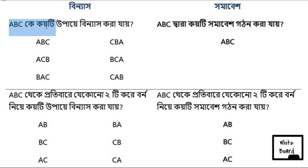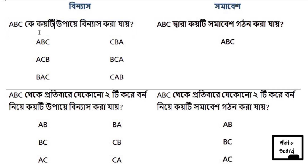We'll call it a, b, c. We can see a, b, c arranged in different ways. There are 3 objects, and we can arrange them.